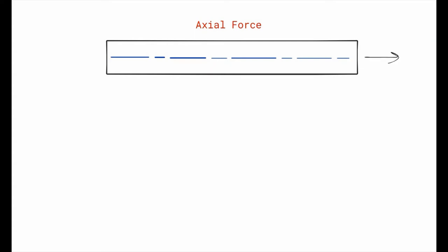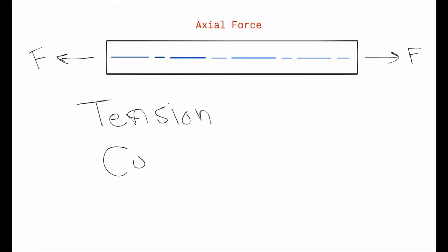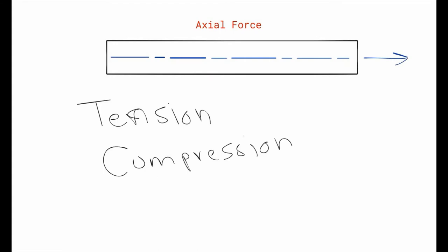Axial force is the one that you apply in the direction of the axis of the member. This force can be either a tension force or a compression force. Let's try to understand what happens inside the member when you either try to stretch it or compress it.